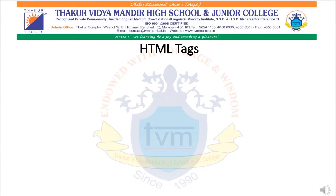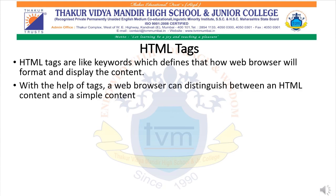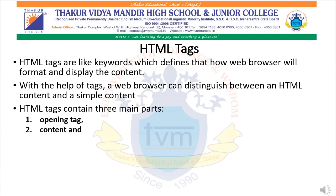HTML tags are like keywords which define how a web browser will format and display the content. With the help of tags, a web browser can distinguish between HTML content and simple content. HTML tags contain three main parts: first, open tag; second, content; and third, close tag.